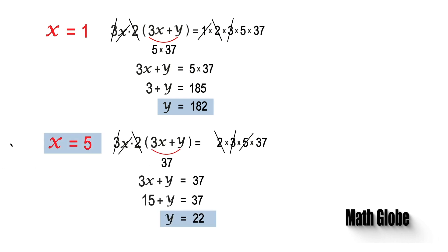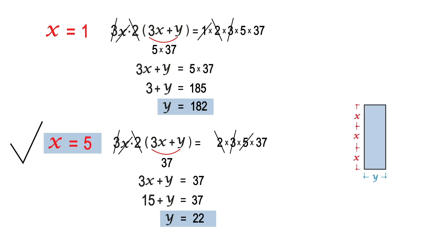Thus X must be equal to 5, as we need the longest possible side lengths for squares. Using this X value, we can now calculate the perimeter of the blue shape. The answer is 74.